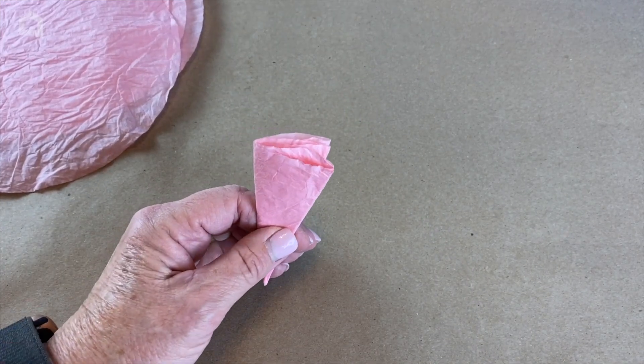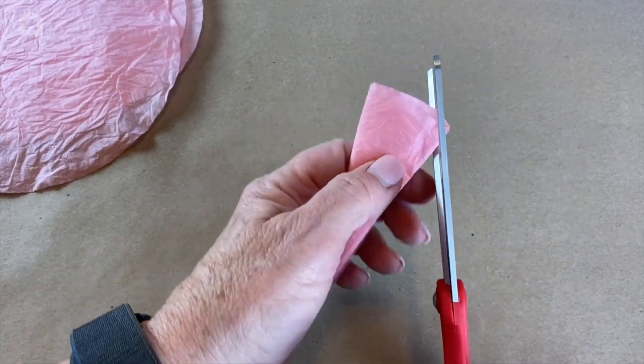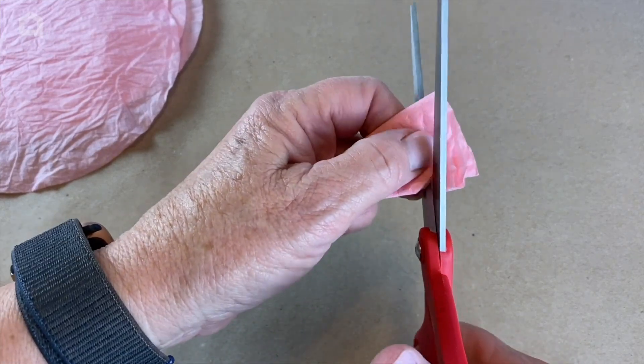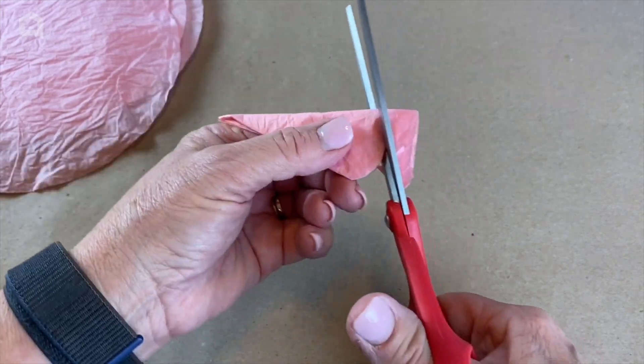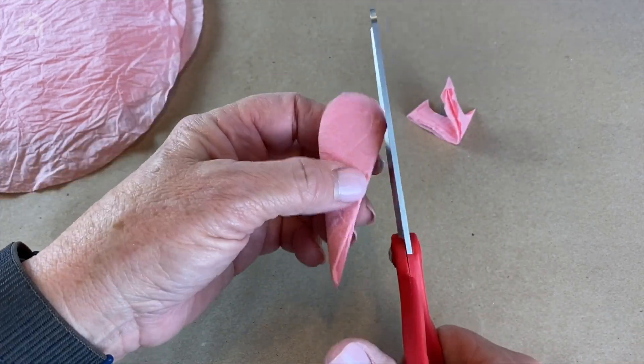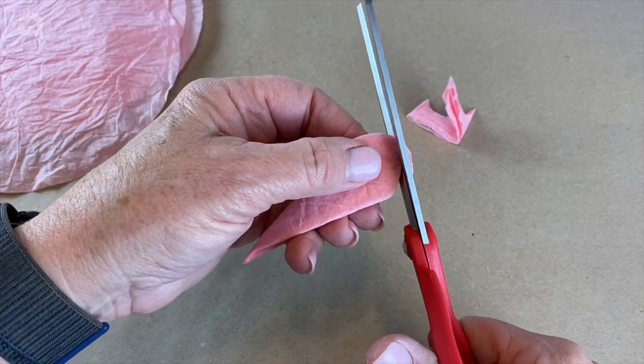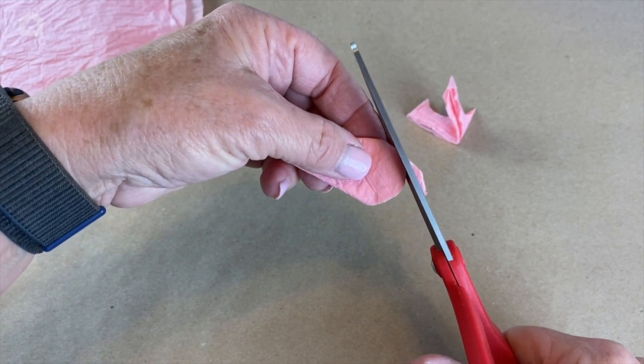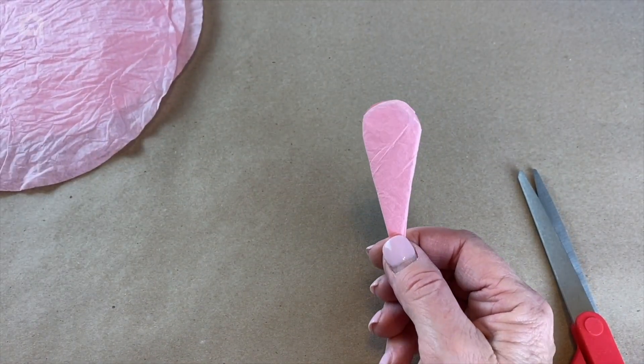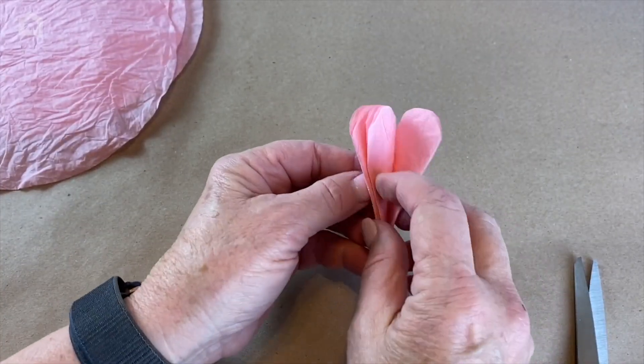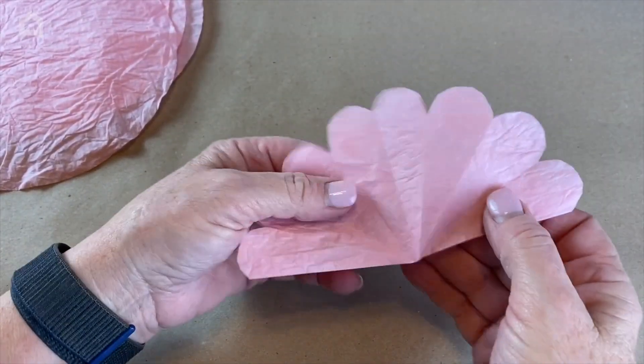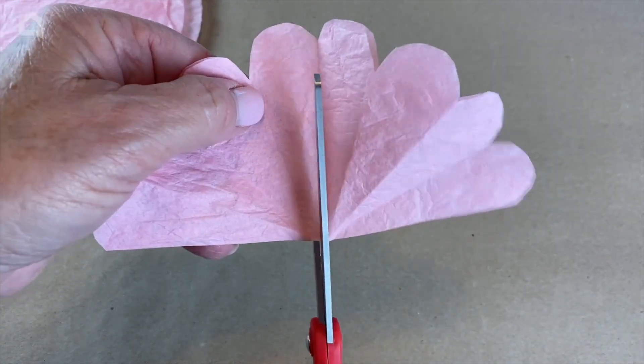Then you're going to take your scissors and cut. You just want to cut a little curve. This does not have to be exact. Remember, in nature, flowers are not all exact. They aren't all exactly the same. I wanted that to be a little more curved, so I cut it off a little more. And it's going to kind of look like an ice cream cone. Then what we're going to do is we're going to unfold it.